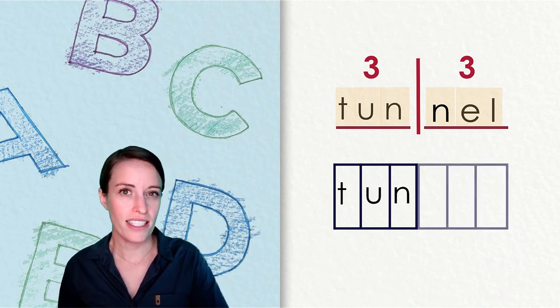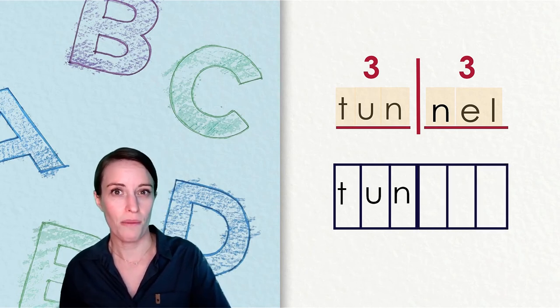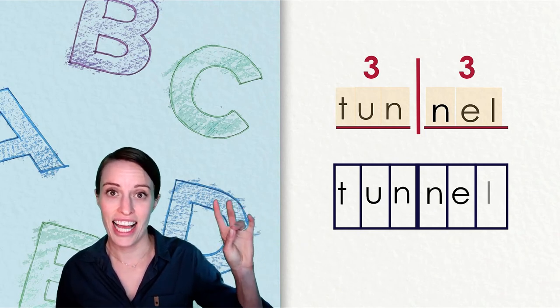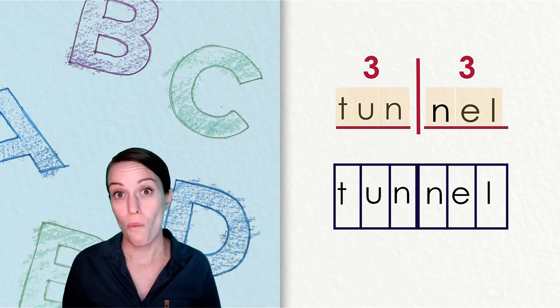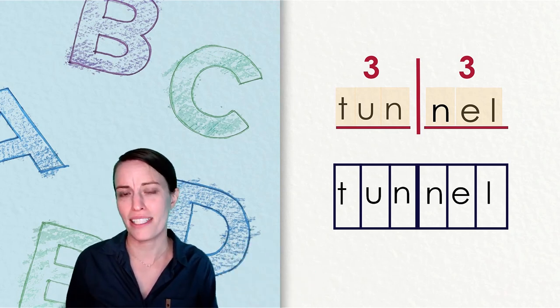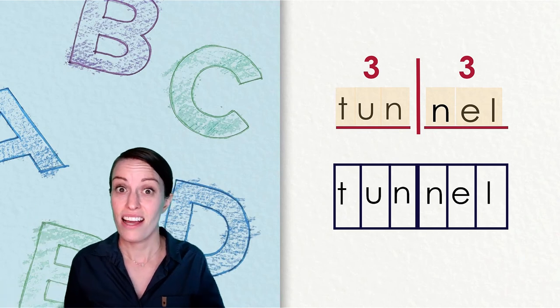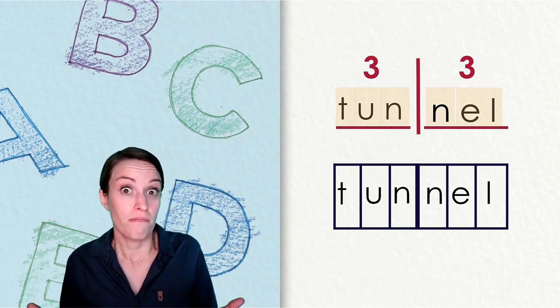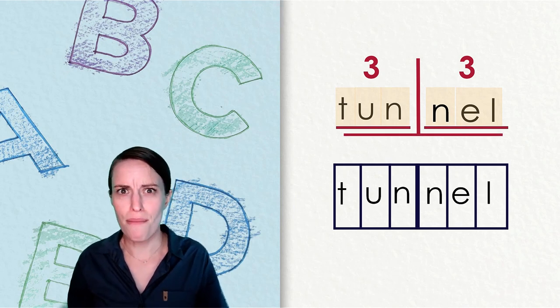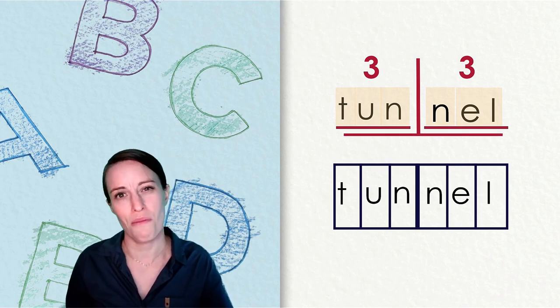Let's put them in our sound boxes. Here we go. N-E-L. All right. We have the part ton and then the second part or syllable N-E-L. Tunnel. Nice job decoding that two-syllable word.